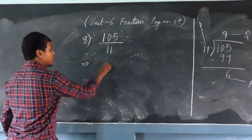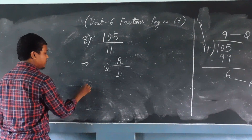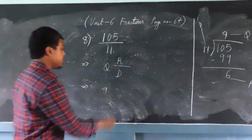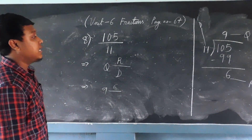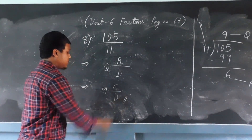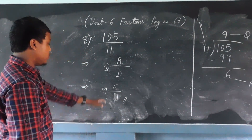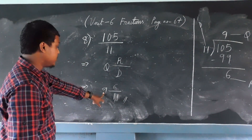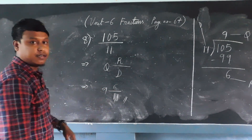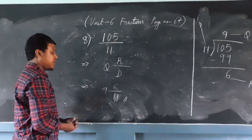Same way — quotient, remainder over divisor. The quotient is 9, the remainder is 6, and the divisor is 11. So the answer is 9 and 6/11. This is how we change an improper fraction into a mixed fraction or mixed number.